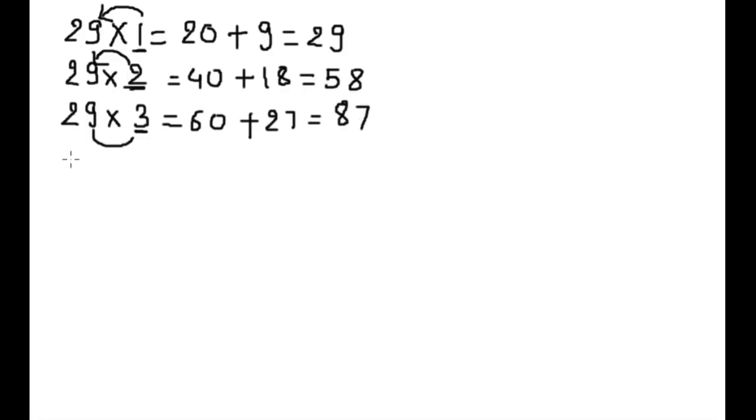29 into 4. Double of 4 is 8. Put 0. 9 into 4 is 36. 116.